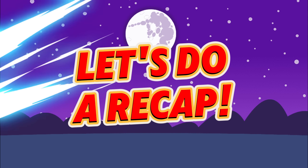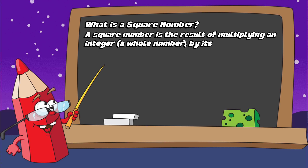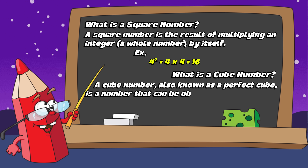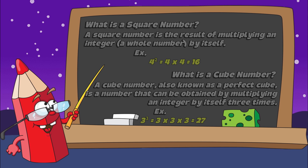Let's do a recap. What is a square number? A square number is the result of multiplying an integer, a whole number, by itself. Example: four squared is four times four equals sixteen. What is a cube number? A cube number, also known as a perfect cube, is a number that can be obtained by multiplying an integer by itself three times. Example: three cubed is three times three times three equals twenty-seven.